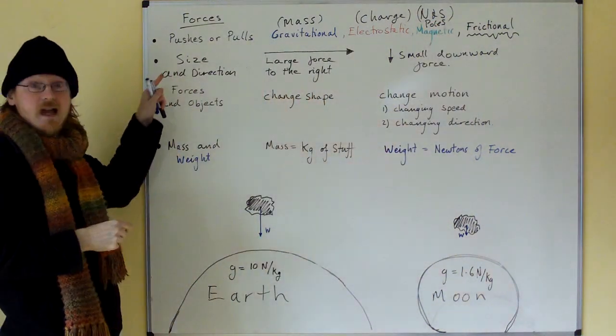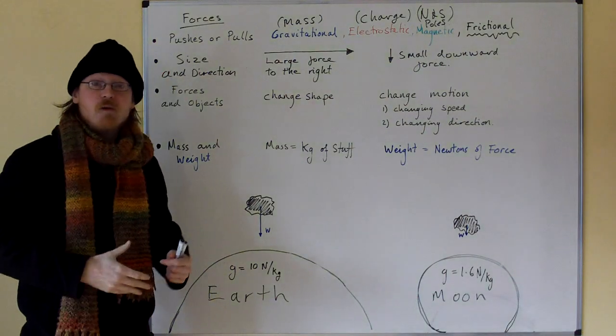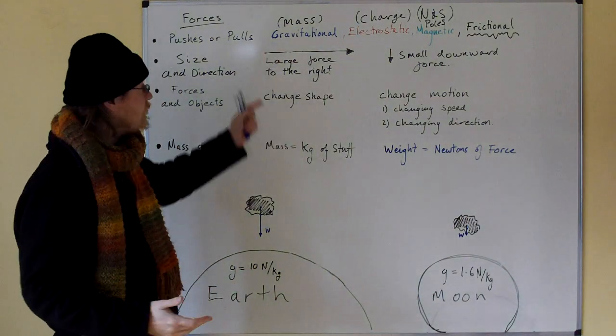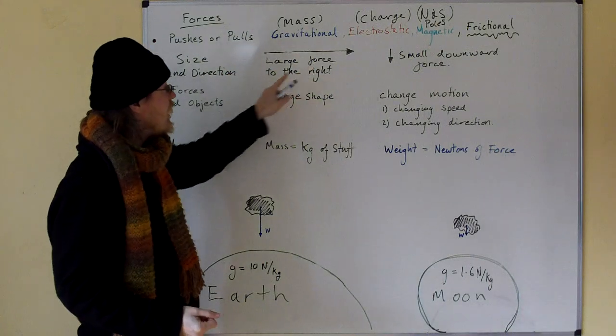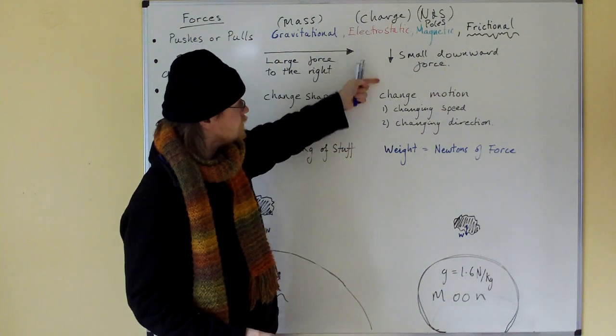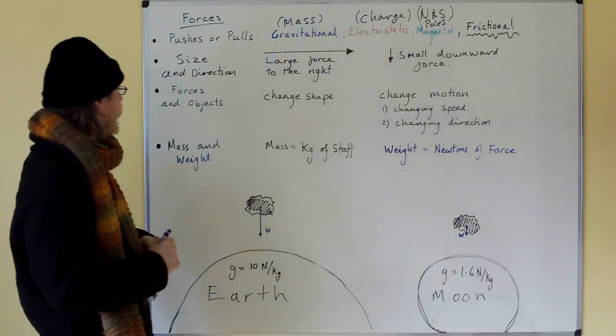Size and direction of forces. How do we show the size and direction of a force? We show it with an arrow. Very simply, this is a large force to the right, and this is a small downward force.